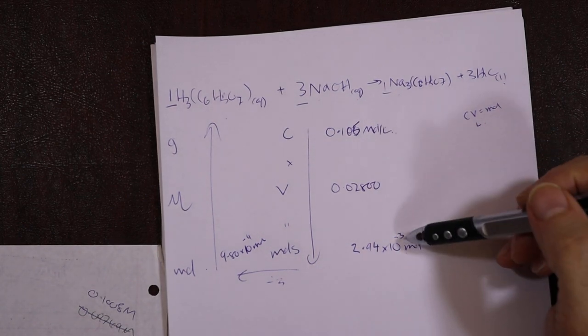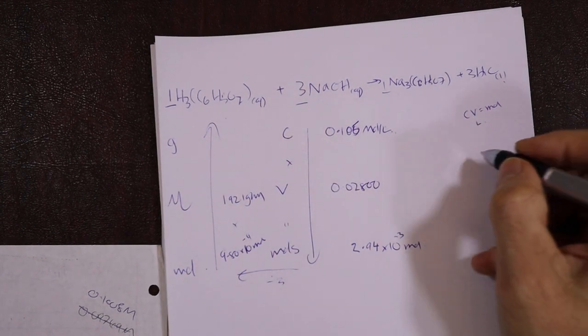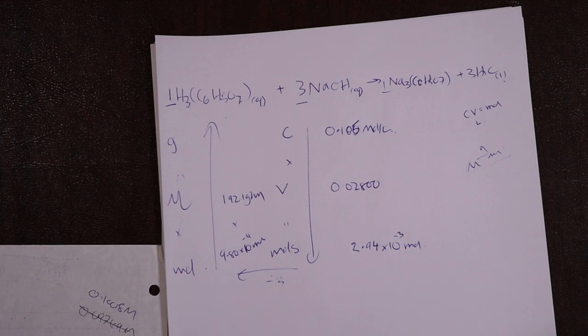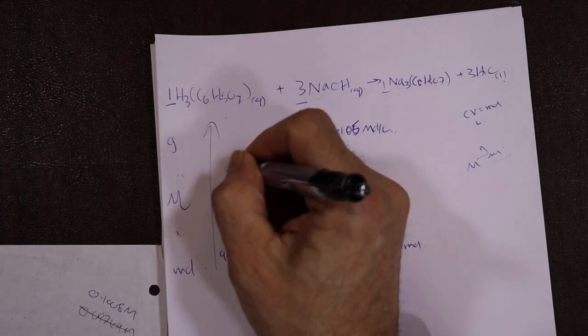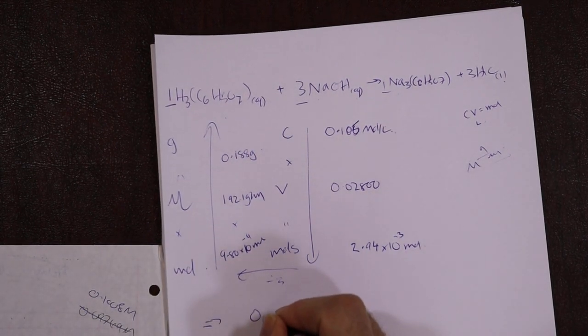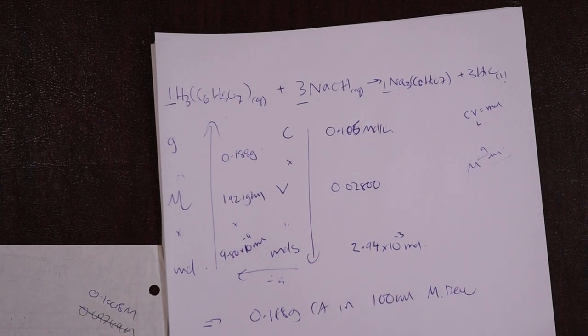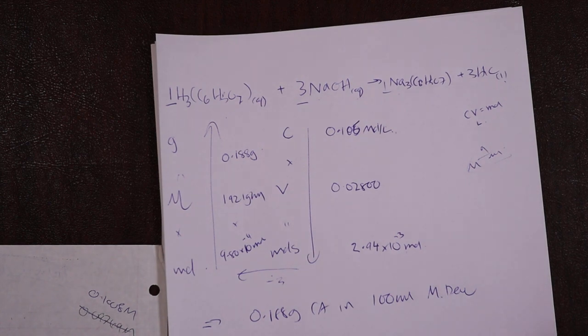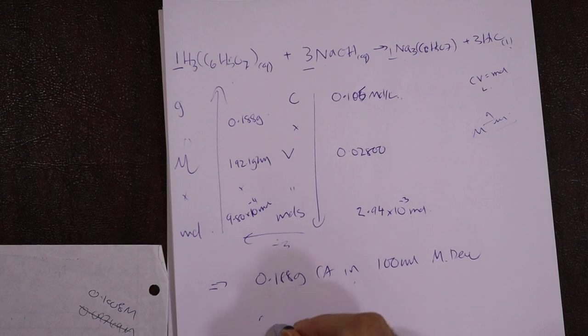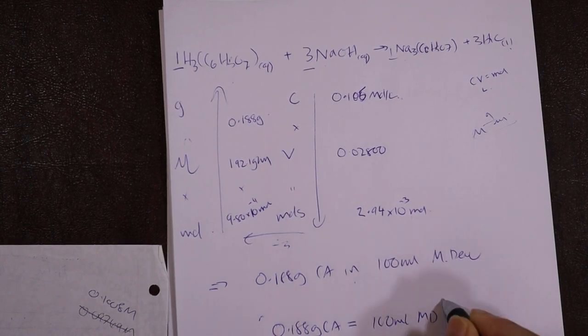Three of these reacts with one of those. Let's divide this number by three to get over here. Divided by three, it's going to be 9.80 times 10 to the minus 4 moles. The molecular weight of citric acid is 192.1 grams per mole. Multiply to go up: times 192.1 equals 0.188. Therefore, there's 0.188 grams of citric acid in 100 milliliters of Mountain Dew.